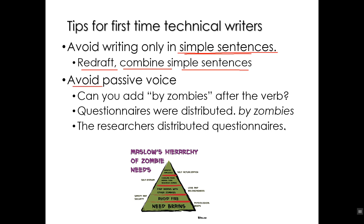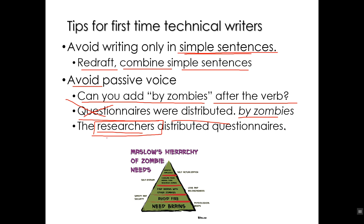Another mistake students make when writing technically is passive voice. What is passive voice? If you can add 'by zombies' after the verb, then it's passive voice. For example: 'questionnaires were distributed by zombies' — yes, that works, so that's passive voice. Rewrite it as: 'The researchers distributed questionnaires.' Now we know who distributed them, so that's not passive voice. It's also more complete, because we now know exactly who performed the action.